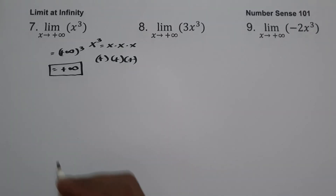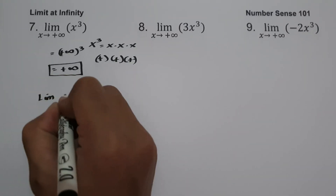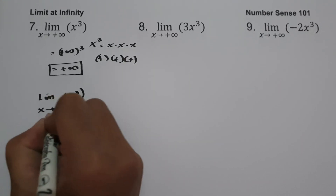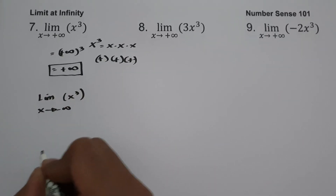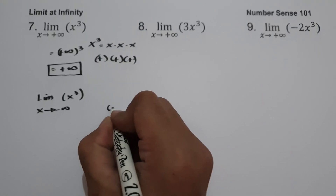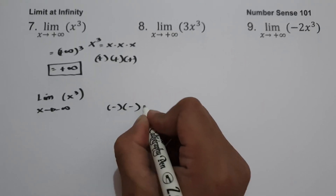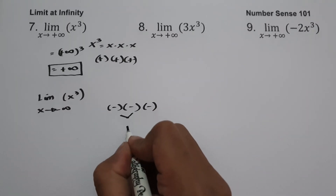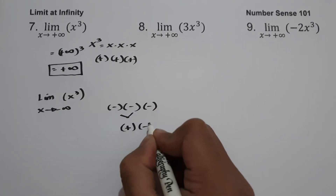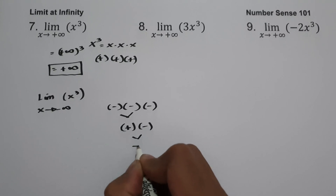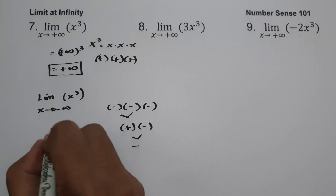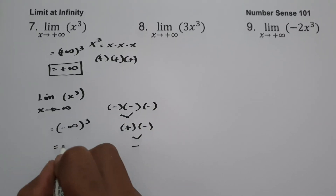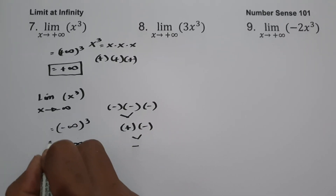If we have the limit of x cubed as x approaches negative infinity, we get negative infinity raised to 3, which is negative times negative times negative. Negative times negative is positive, and positive times negative is negative. So negative infinity raised to 3 gives us negative infinity.